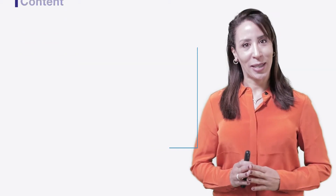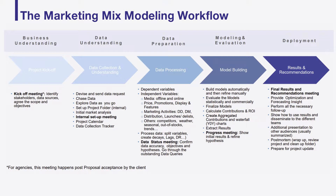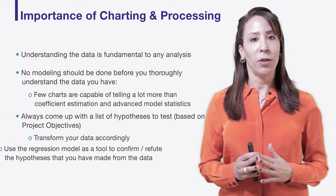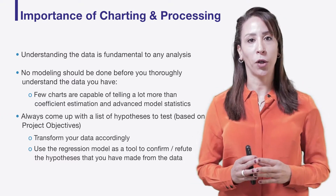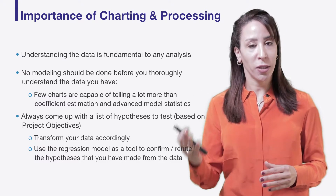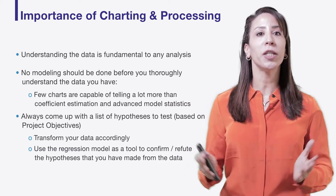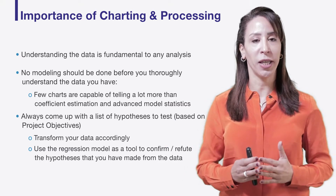Referring back to our standard marketing mix modeling workflow, we are now moving on to the third phase: data processing. In the software, this is done through the process module where you can create all the transformations needed. We have already established the importance of exploring your data — whether it's a scatter plot, a correlation function, or univariate statistics — all these components are key to the data processing stage.